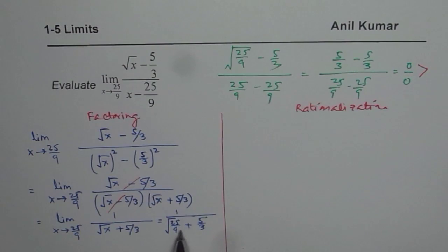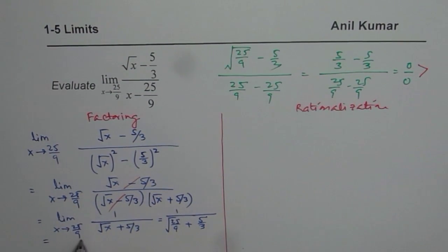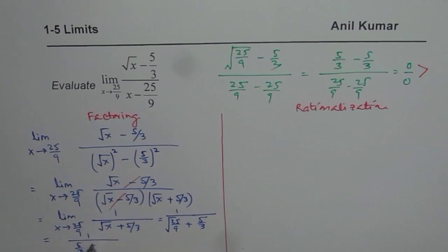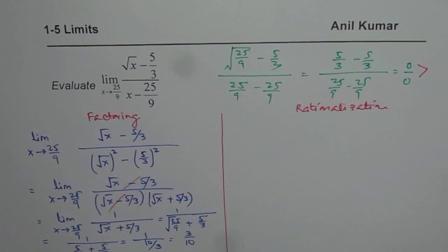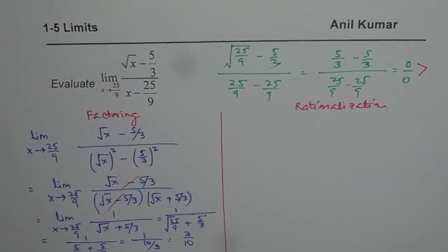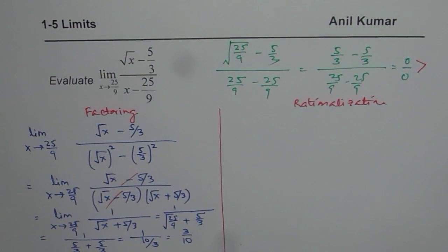So this could be simplified and written as 1 over 5 over 3 plus 5 over 3 which is 1 over 10 over 3, right? 10 over 3 or 3 over 10. So 3 over 10 is the limit for this function and you can clearly see how it can be done using factoring.